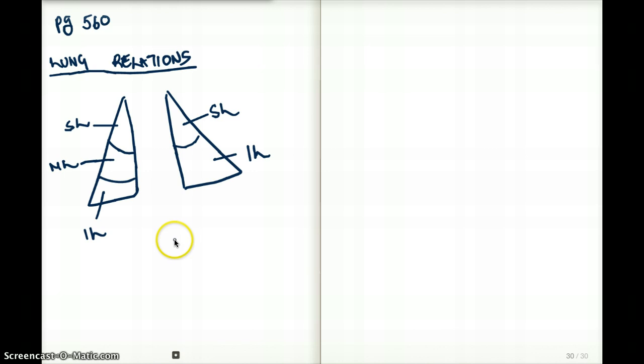The thing is, the right bronchus is short and more straight than the left bronchus. That's why aspiration is very commonly seen in the right lung than the left lung.